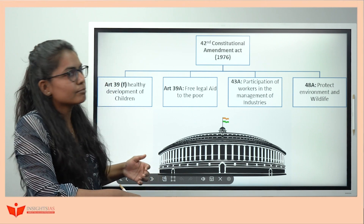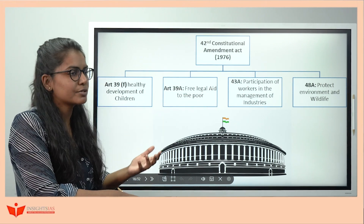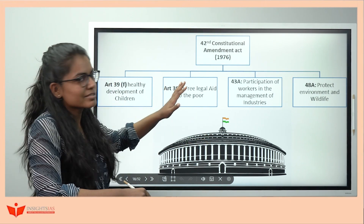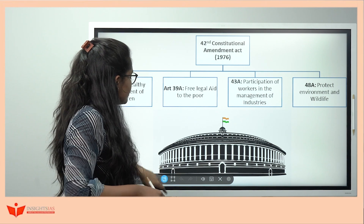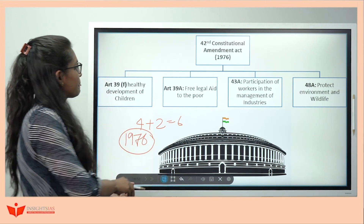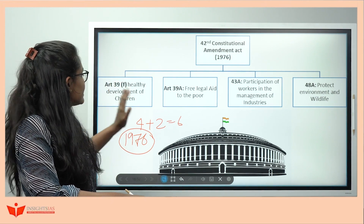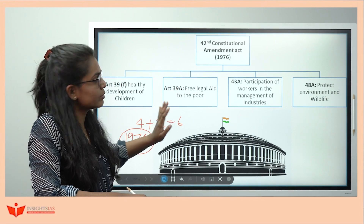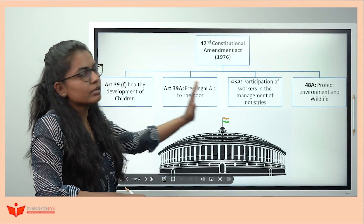Let's see which articles were added through Constitutional Amendment Acts. The 42nd Constitutional Amendment Act — known as the 'mini constitution' — came in 1976. Remember: 4+2=6, so 1976. Through the 42nd CA, four DPSPs were added: Article 39F — development of children; Article 39A — free legal aid (Jai Bhim); Article 43A — participation of workers; and Article 48A — protection of environment.